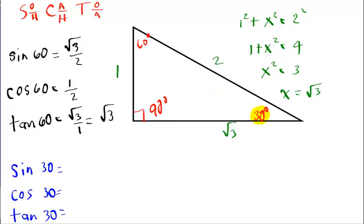Working with 30. And everything changes because now the opposite side is 1. So, for the sine, it's opposite over hypotenuse. That's the sine. The cosine is the adjacent over the hypotenuse. And the tangent is opposite over adjacent.